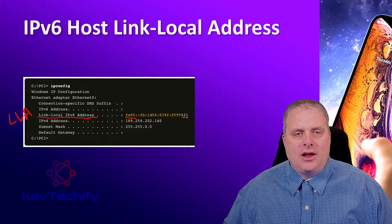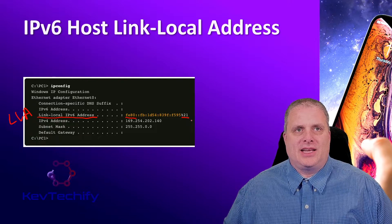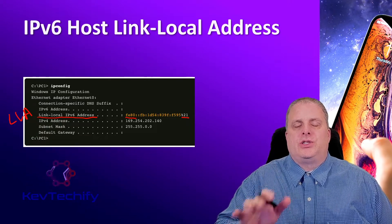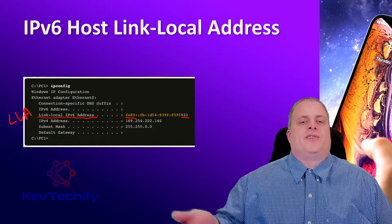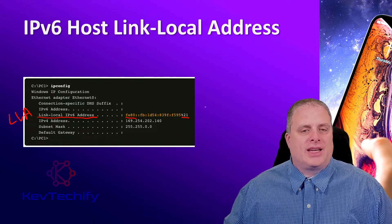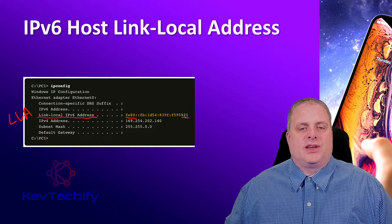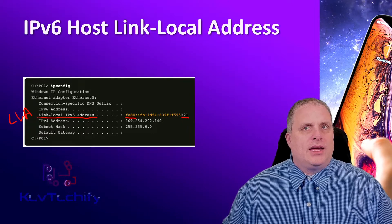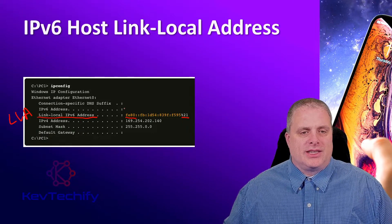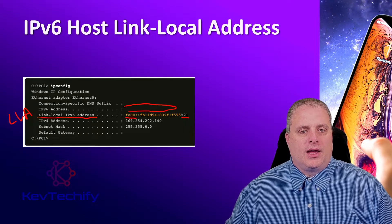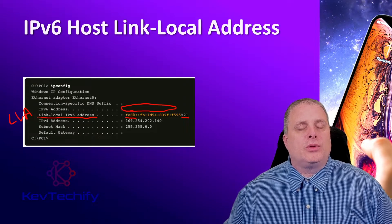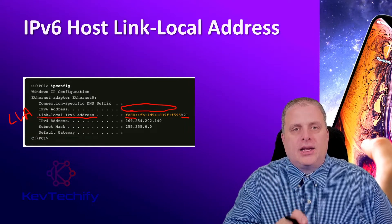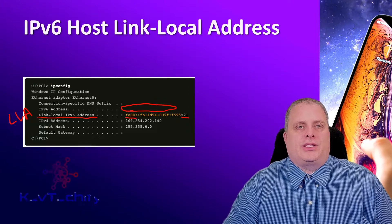The percent sign here at the end signifies the zone ID or the scope ID. That's used by the operating system to associate this link local address with a specific interface. That's how we can tie this link local address to a specific interface using this zone ID or scope ID. We didn't get a global unicast address — this field right here is blank — because there was no router on our local segment, our LAN, to tell us how to set up our global unicast address.